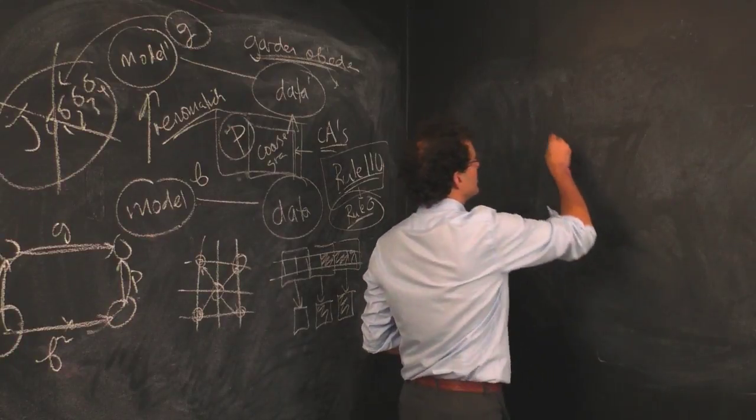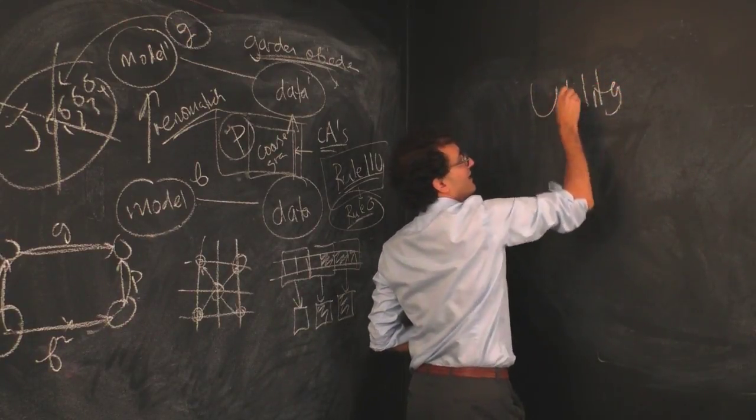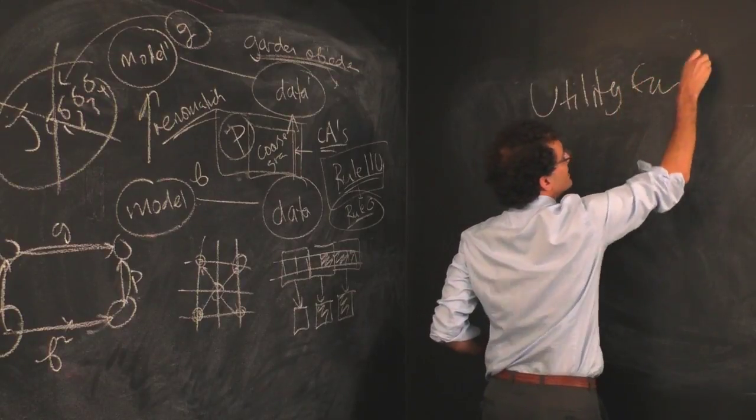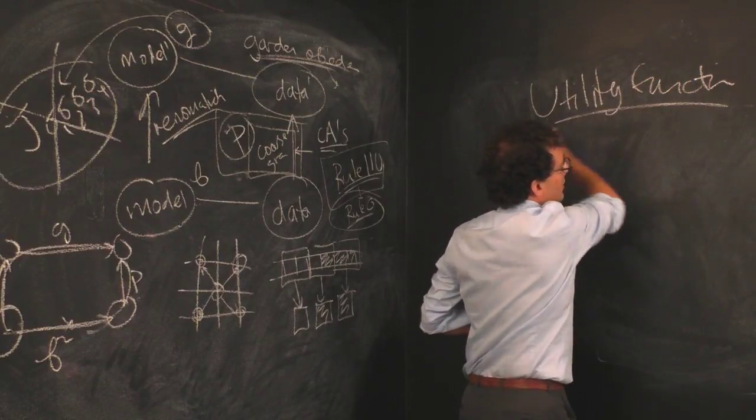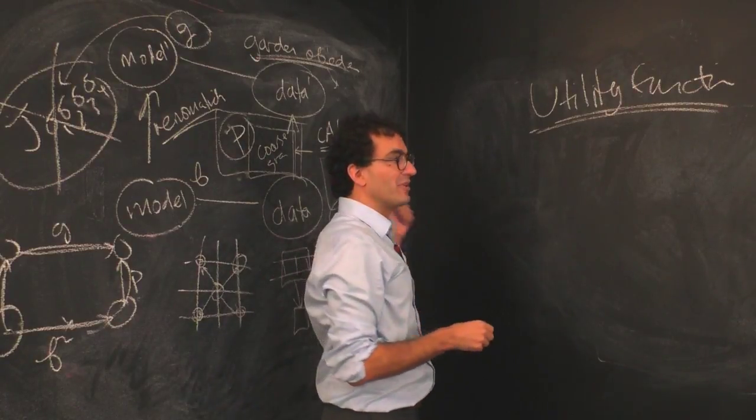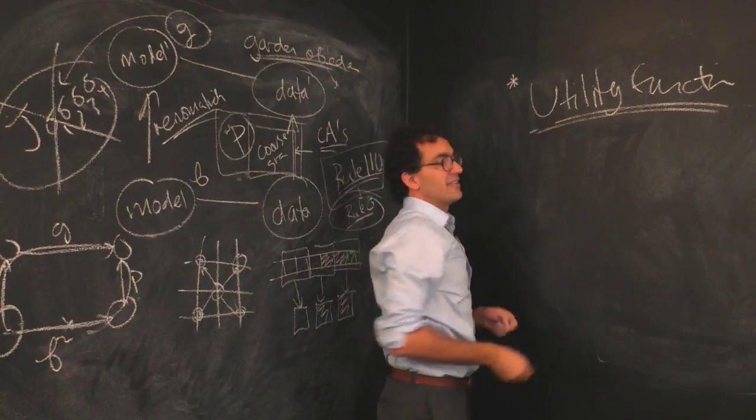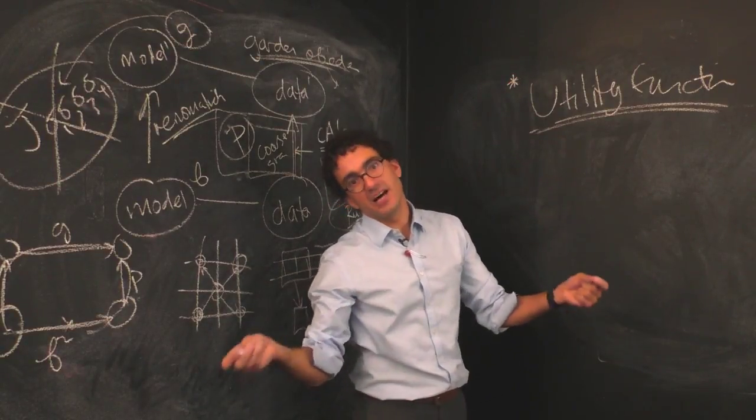Hidden inside that story is an unacknowledged utility function. And to me this is the frontier of how we should understand what we want renormalization and coarse graining to do. It took us a long time to realize that coarse grainings were secretly ideological things.